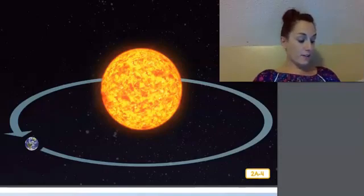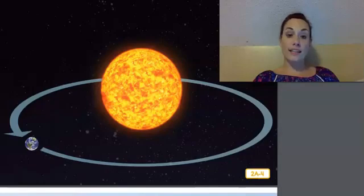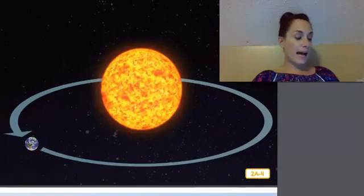Earth moves or revolves around the sun following a constant path. The path that earth follows around the sun is called the earth's orbit. Earth follows the same path as it revolves around or orbits the sun. It takes about 365 days or one year for earth to make one complete orbit or revolution around the sun.